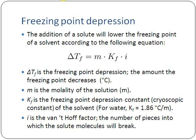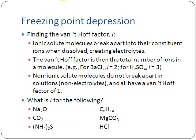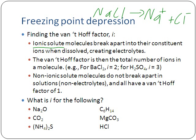Finding the Van't Hoff factor i: if you have an ionic solute, ionic solute molecules break apart into their constituent ions when dissolved, creating electrolytes. For NaCl, which is ionic, it breaks up into sodium ions (positive) plus chlorine ions (negative) - it breaks into two ions. So for NaCl, the Van't Hoff factor is simply equal to two.